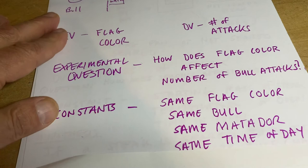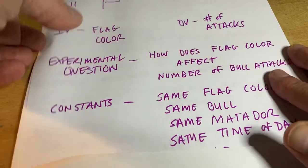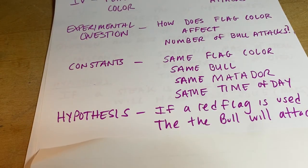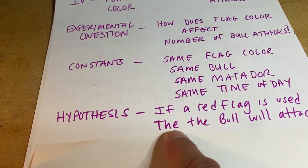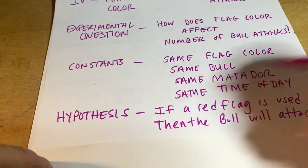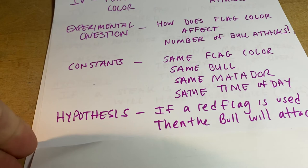Lots of things need to be the same for this to be a fair test. And then the hypothesis was, if a red flag is used, then the bull will attack more. So that's basically what they think is going to happen.